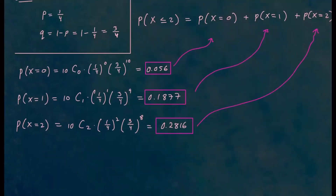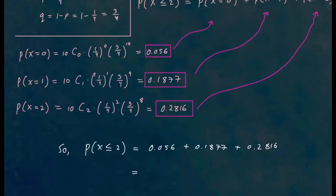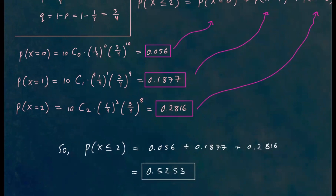So our final answer: probability that X is less than or equal to two equals 0.056 plus 0.1877 plus 0.2816. Adding them up gives about 0.5253. That is the probability for this particular event.